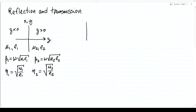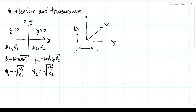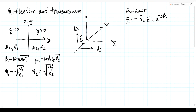Let's draw this in perspective. Here are the x and y axes, and into the board is the z-axis. We assume that we have an incident field with electric field E incident, magnetic field H incident, propagating in the z-direction. The incident electric field is polarized in the x-direction, linearly polarized, with amplitude E0, and propagates as e to the minus j beta1 z. The corresponding H field is in the y-direction with amplitude E0 over eta1 and the same propagation factor.